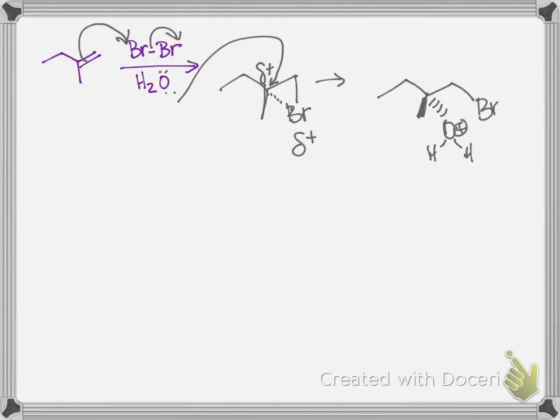That anti-addition, that stereochemistry is the same as when it's just bromine being added. I'm not showing stereochemistry on the carbon where the bromine is attached because that is not a chiral carbon due to the fact that there's two hydrogens.